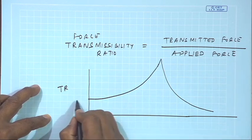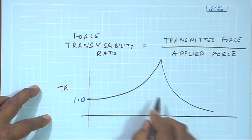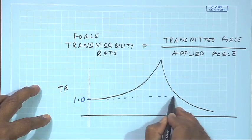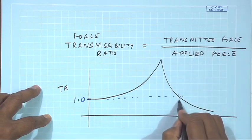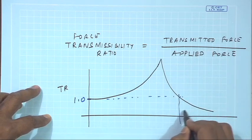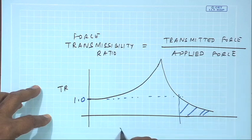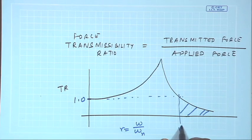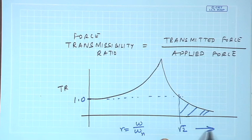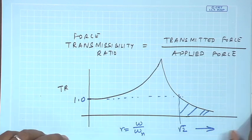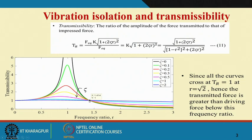It is very important that at r = √2, the transmissibility equals 1. If I need the transmitted force to always be less than 1, then r — which is ω/ωn — must be greater than root 2, i.e., 1.414. So the desirable range is that the frequency ratio is always greater than root 2.